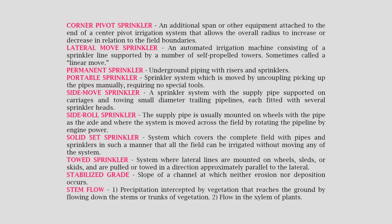Corner pivot sprinkler: an additional span or other equipment attached to the end of a center pivot irrigation system that allows the overall radius to increase or decrease in relation to the field boundaries. Lateral move sprinkler: an automated irrigation machine consisting of a sprinkler line supported by a number of self-propelled towers, sometimes called a linear move. Permanent sprinkler: underground piping with risers and sprinklers. Portable sprinkler: a sprinkler system which is moved by uncoupling and picking up the pipes manually, requiring no special tools.